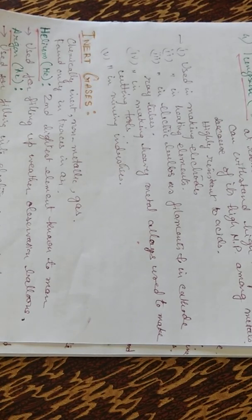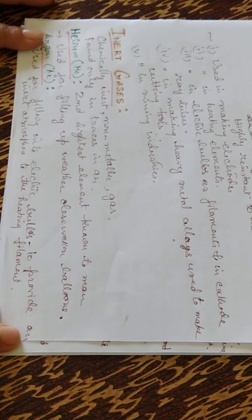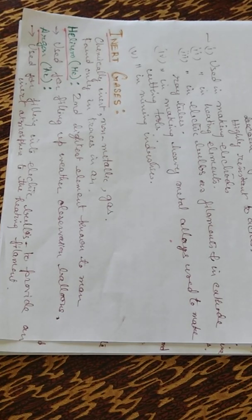Now inert gases, the chemically inert non-metallic gases found in traces in air. Helium. Helium is the second lightest element known to man. They are used for filling up weather observation balloons.